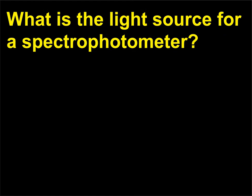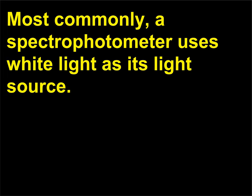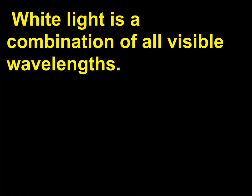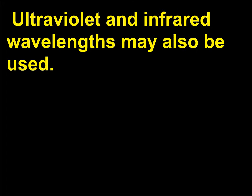What is the light source for a spectrophotometer? Most commonly, a spectrophotometer uses white light as its light source. White light is a combination of all visible wavelengths. Ultraviolet and infrared wavelengths may also be used.